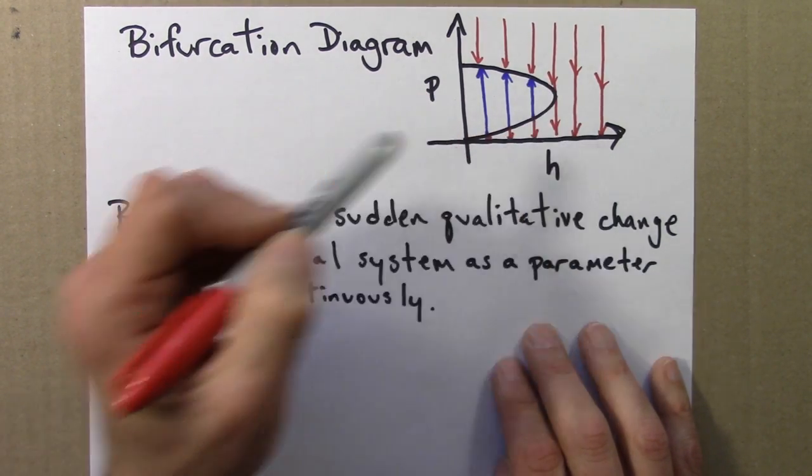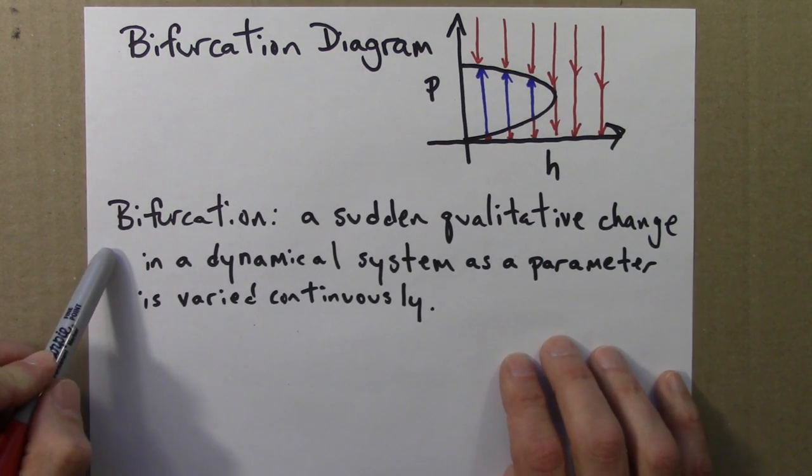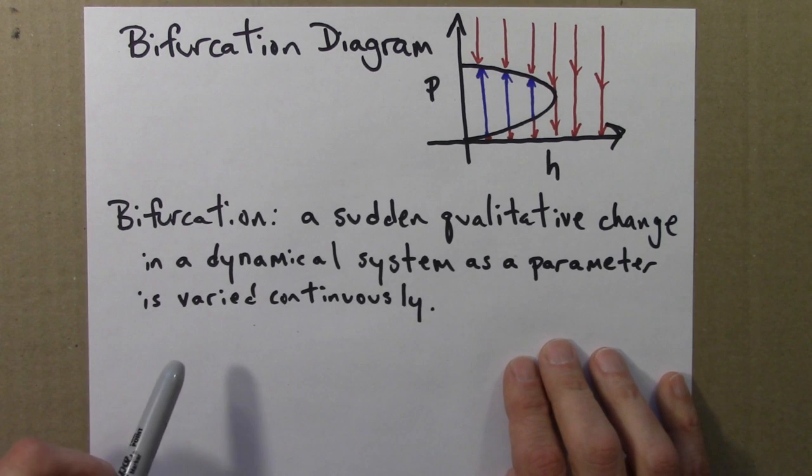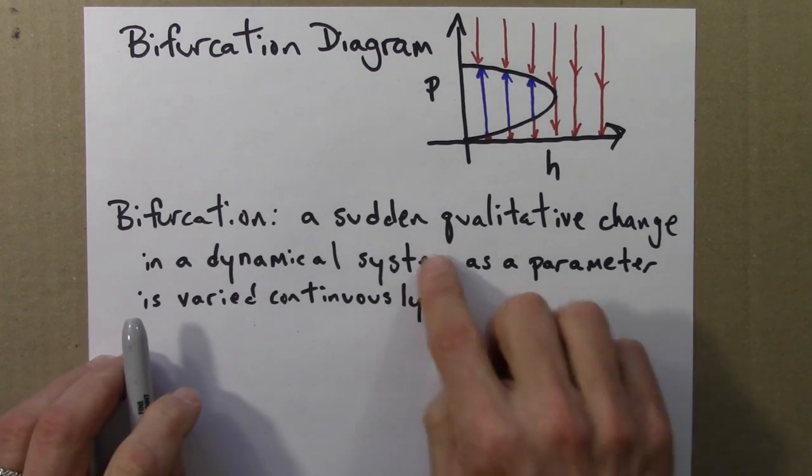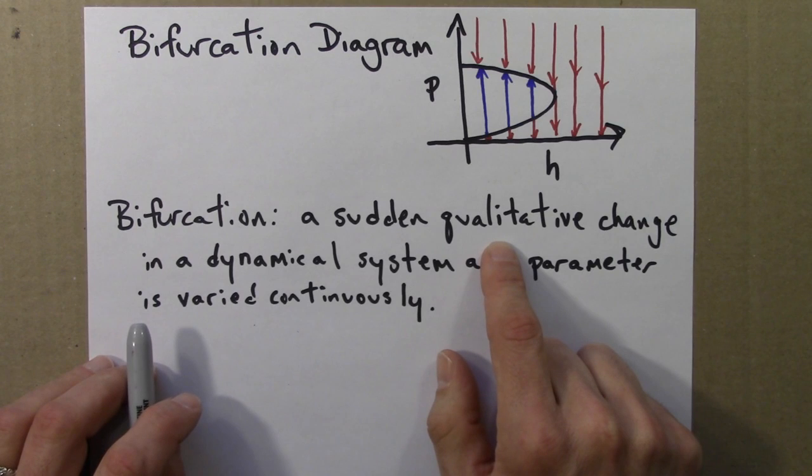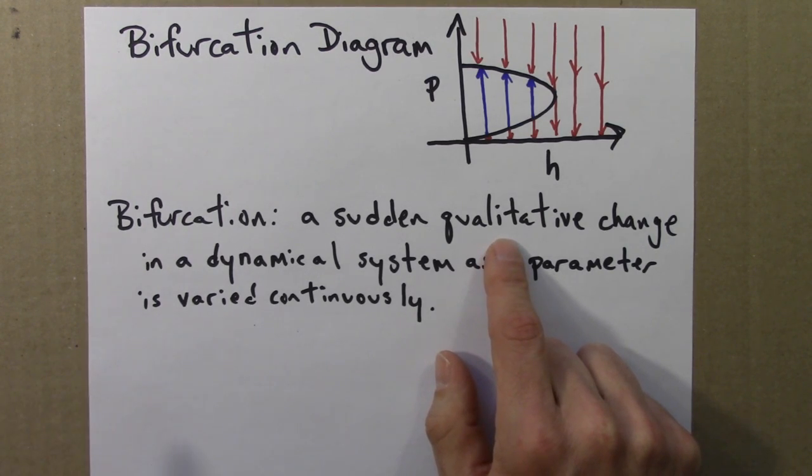So again, a bifurcation is a sudden qualitative change in a dynamical system as a parameter is varied continuously. What I mean by sudden qualitative change, a qualitative change is not the location of a fixed point, but a change in the number of fixed points and or their stability. So that's a sudden qualitative change in the overall character of the global behavior of the system.